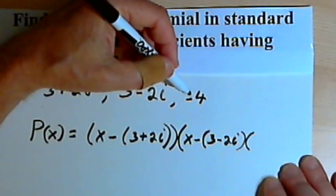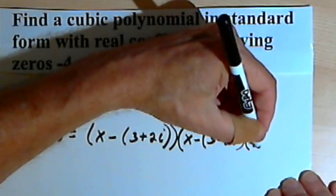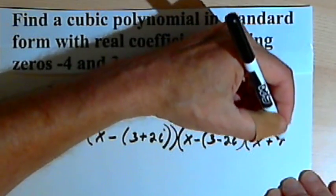And if we've got 3 minus 2i as a zero, then that means that x minus open parenthesis 3 minus 2i close parenthesis is going to be a factor. And finally, if we have negative 4 as a zero, then x plus 4 will be a factor.